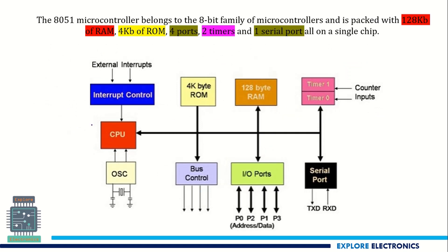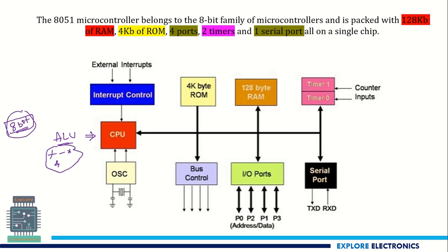In the block diagram, you can see the CPU — the central processing unit. This CPU consists of an ALU. Since we call it an 8-bit microcontroller, this CPU is able to process 8-bit data. The ALU performs arithmetic and logical operations on 8-bit data, which is why the CPU is capable of 8-bit processing.